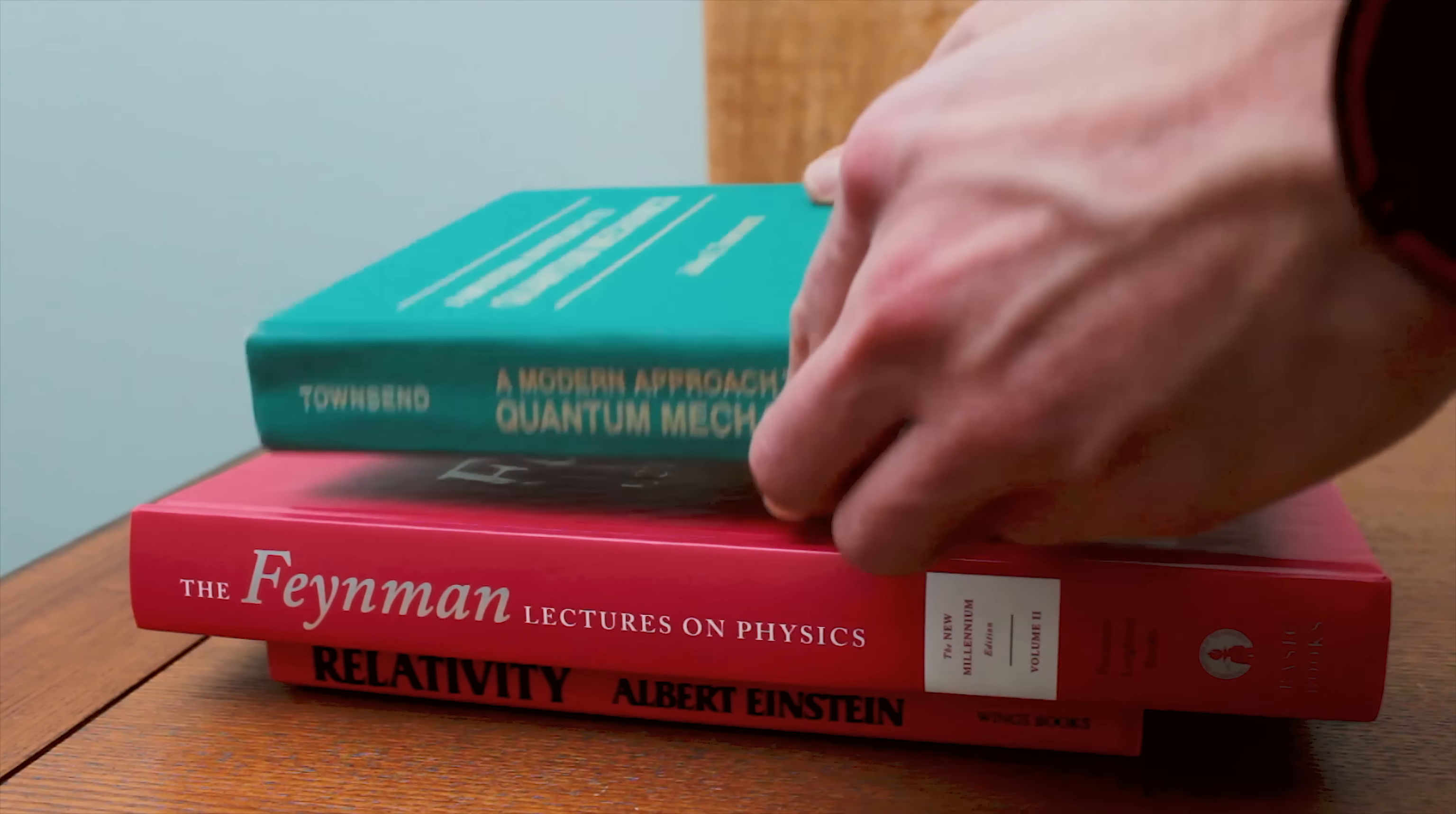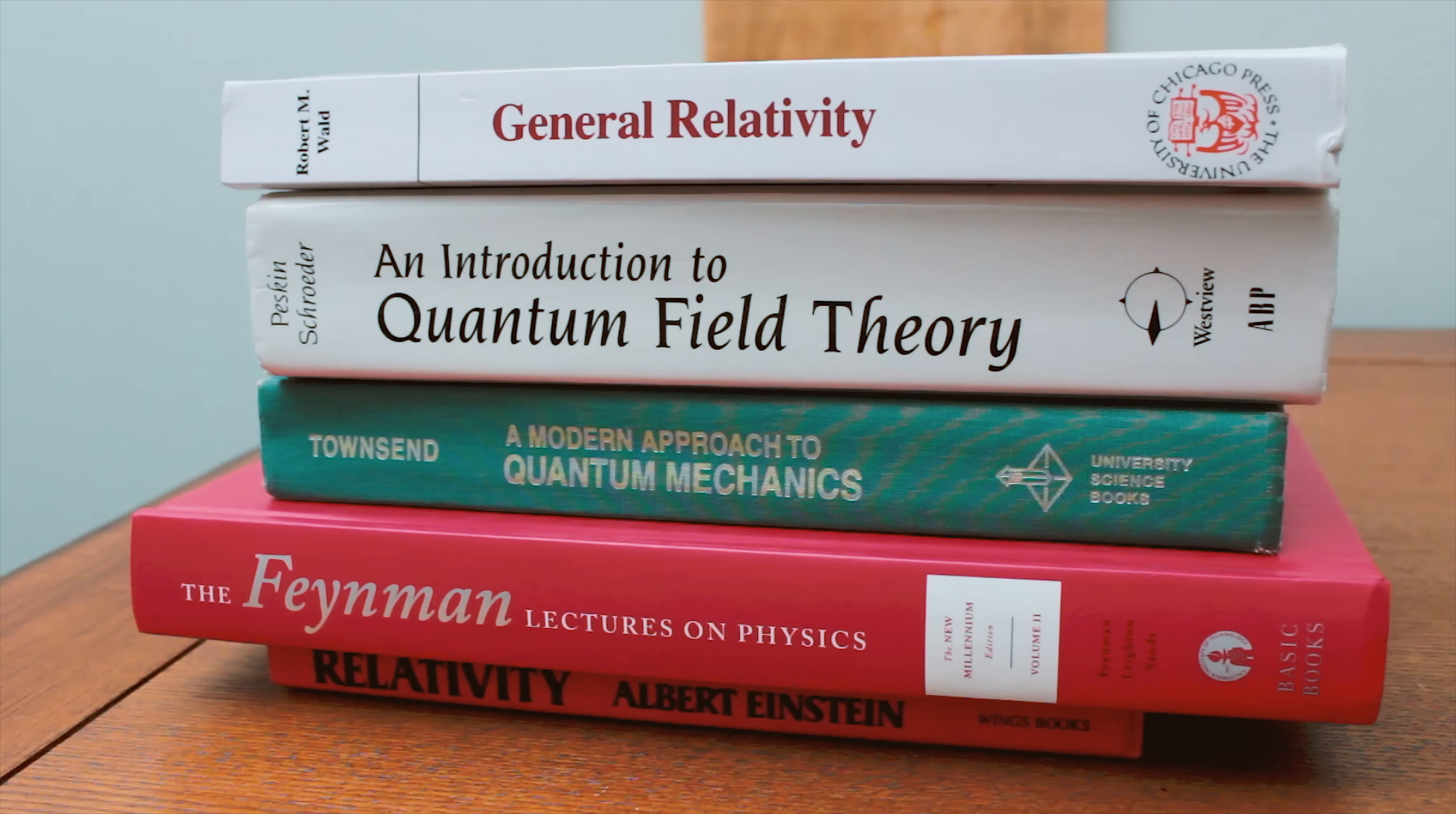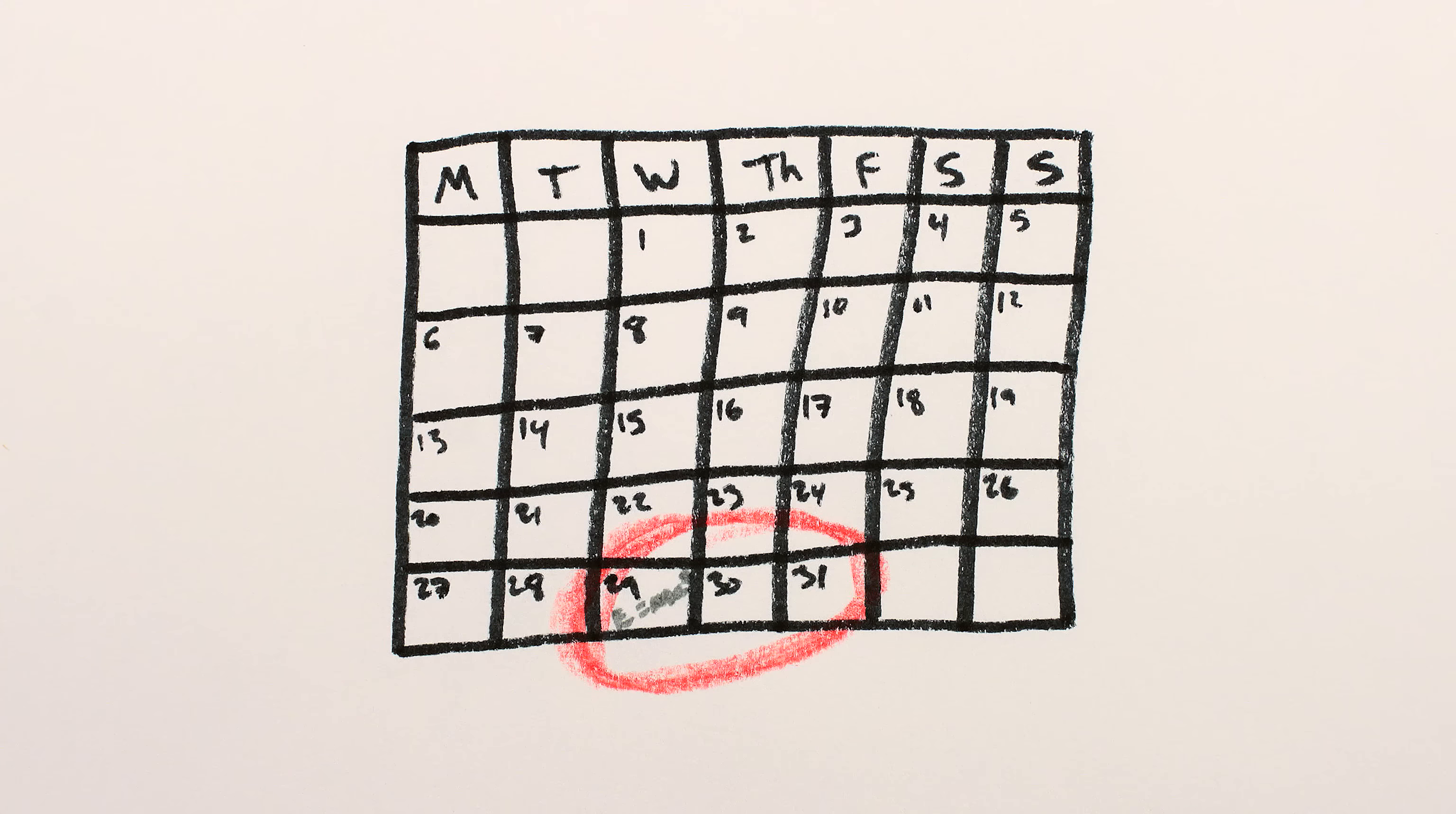You might see classical mechanics, or quantum mechanics, or electromagnetism, or intro to general relativity on a course syllabus. But it's surprisingly rare to see special relativity, even though relativity is an essential building block upon which most of the rest of modern physics depends. Special relativity is typically relegated to just a few days squeezed into the beginning or end of other physics courses.